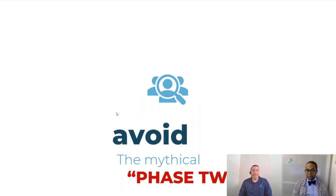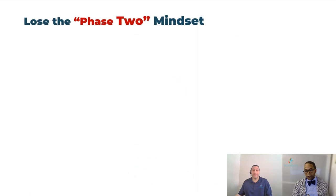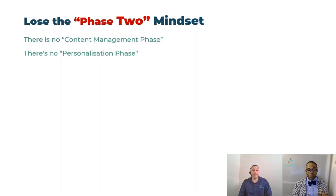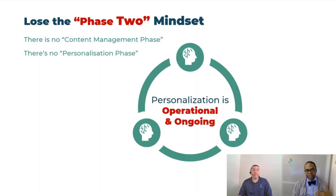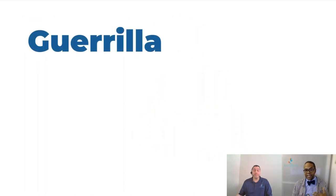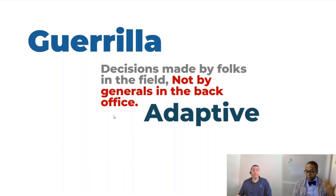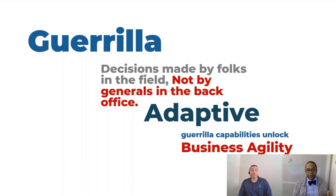What we want to hone in on here are ways to avoid phase two by taking on what we call guerrilla tactics. There is no phase two when it comes to personalization — just like there's no content management phase, there's no personalization phase either. Personalization is something we have to think about as an ongoing operational activity. In guerrilla warfare, decisions are made by people on the field rather than the generals in the back office. Guerrilla tactics are adaptive and enable your business to be very agile.